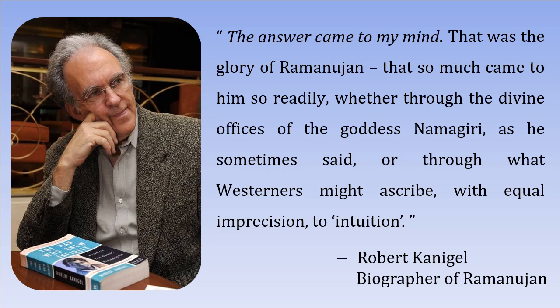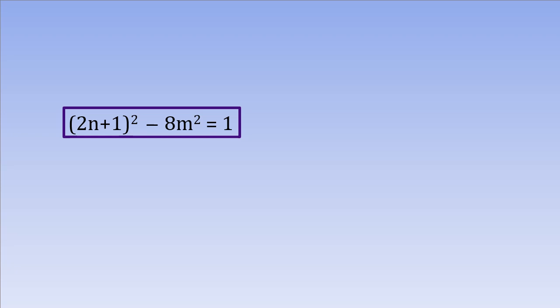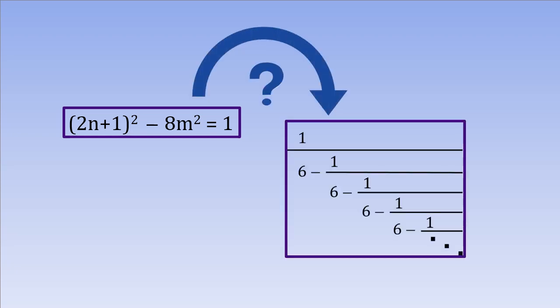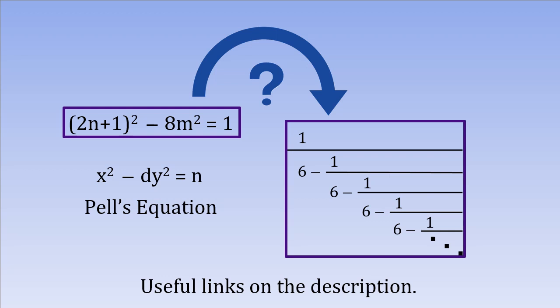No, but really, how did Ramanujan go from here to here? We don't know for sure, but some hints can be found when we realize that our governing equation is a special form of a more general set known as Pell's equation. I encourage you to give it a try. In case you need a hand, I will put some useful links on the description of the video. See you on the next one.